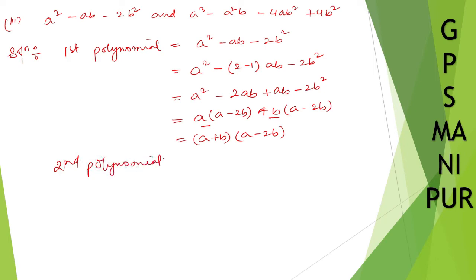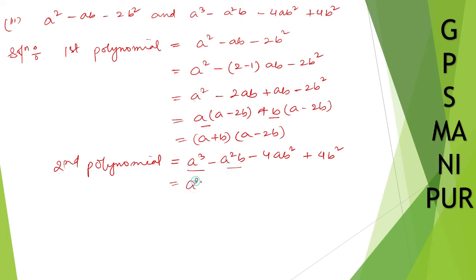The second polynomial is a cube minus a square b minus 4ab square plus 4b cube. I can take a square common from the first two terms: a square(a minus b), and from the last two terms I take 4b square common.